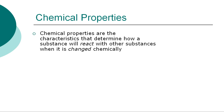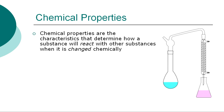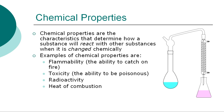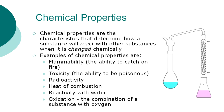Chemical properties are the characteristics that determine how a substance will react with other substances when it is changed chemically. Examples of chemical properties are flammability — the ability to catch on fire — and toxicity, the ability to be poisonous. Other chemical properties are radioactivity and its heat of combustion. Additional chemical properties include how an element reacts with water or acid and oxidation, meaning the result of combining a substance with oxygen. In a chemical change, the substances are altered chemically and display different physical and chemical properties after the change.